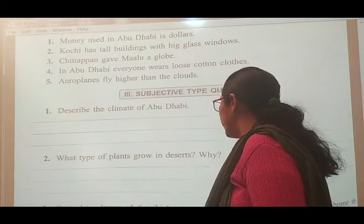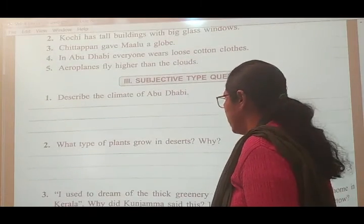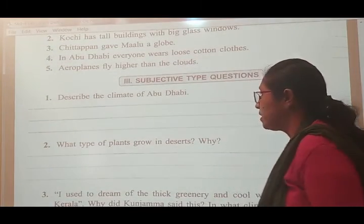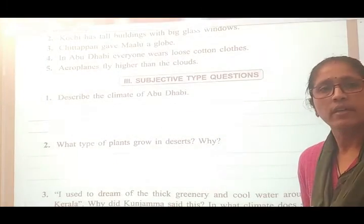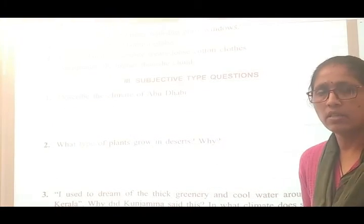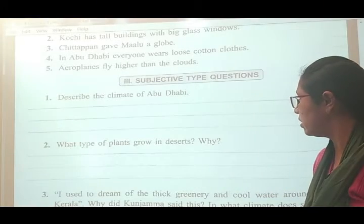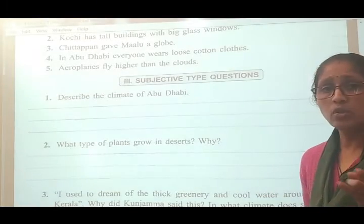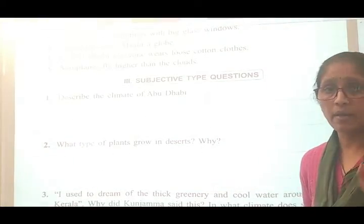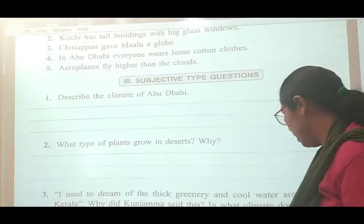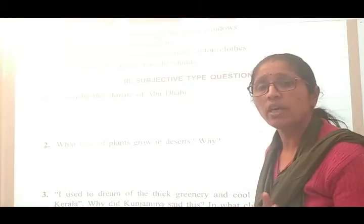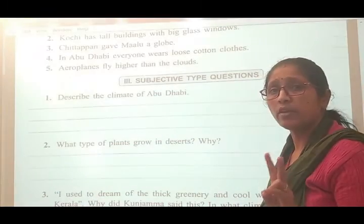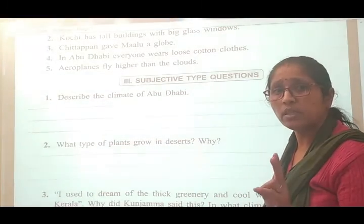What type of plants grow in a desert? Kakki plants are the most common plants grown in the desert. These are plants that need very less water. Cactus and similar plants are the most common plants in the desert because they need very less water.